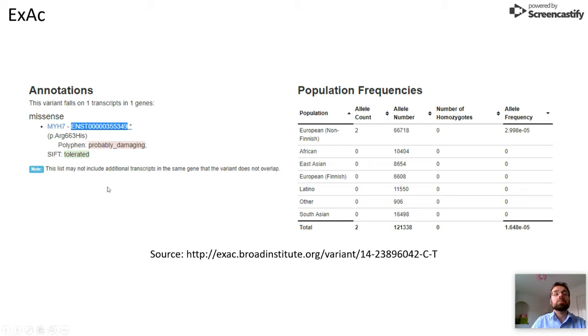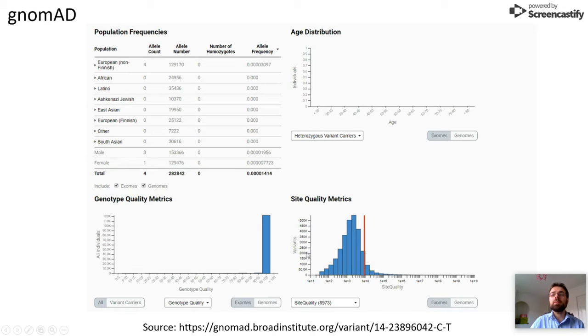From the population databases, we see that the allele frequency in this case is actually very low comparatively to the amount of allele numbers and is mostly described in the European but non-Finnish population. And the gnomAD is in agreement with this. There's twice as many allele counts, all from European non-Finnish origin. The allele frequency is also a little bit lower, but in agreement, and the site quality metrics show that it's very high quality data.